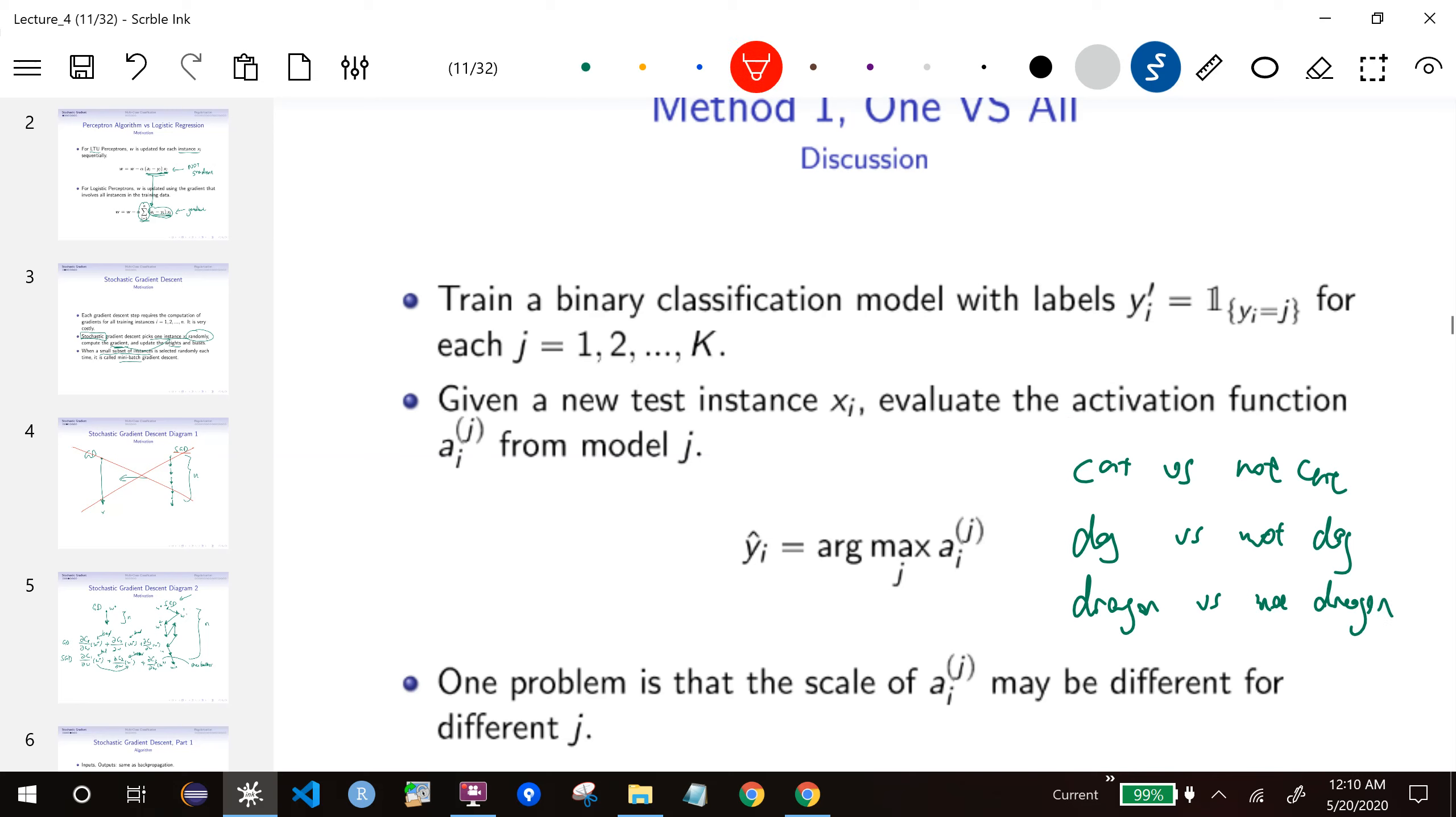Suppose we actually classify a new testing instance and you get, say, it's like 20% a cat and 80% not a cat, and say 10% dog and 90% not a dog, and dragon maybe 70% dragon and 30% not. Then you just pick the largest one, so you pick the one with the largest activation and say it's a dragon.